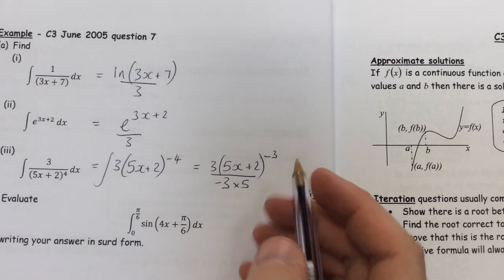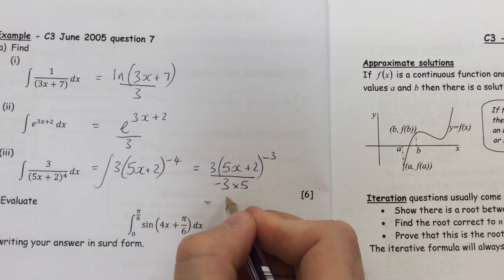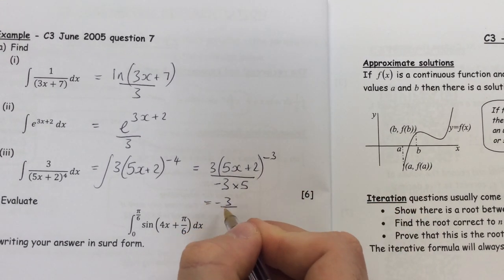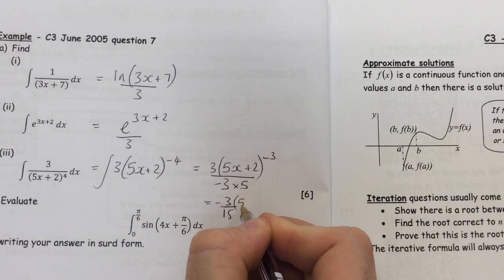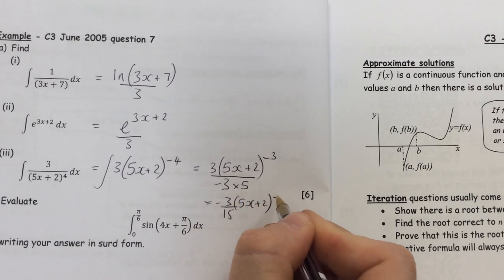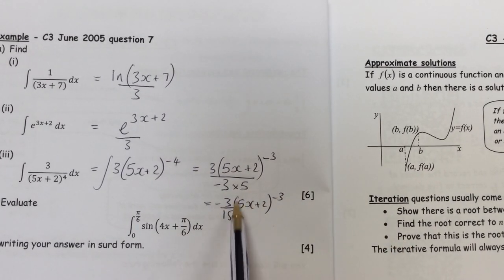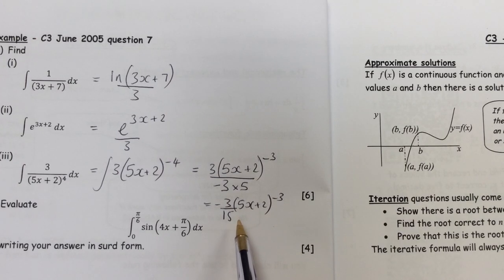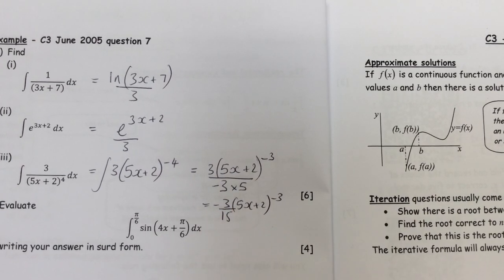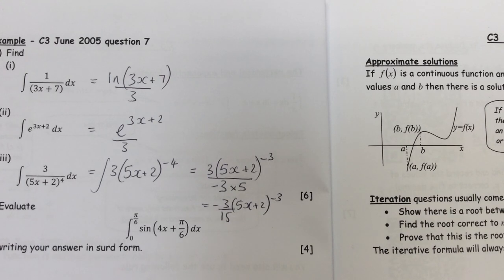So I'm going to end up, in this case, with minus 3 over 15, and then the bracket. If you wanted to, you could then put that bracket on the bottom and have it as a positive power 3, and also 3 over 15, you could cancel that to 1 over 5, but I've run out of space, so I'm not going to do that. Part B with limits we'll look at next.